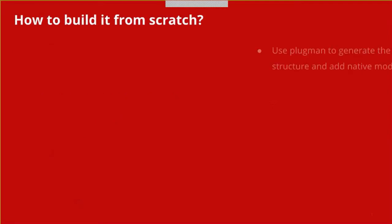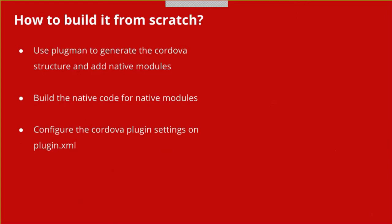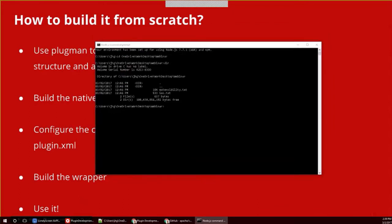Let's see how to build a native plugin from scratch. Use Plugman to generate the Cordova structure and add native modules, then build the native code, configure the plugin.xml for Cordova plugin settings, build the OutSystems wrapper, and finally use it. Using Plugman to create the plugin: this creates a plugin with a given name, plugin ID — which you use when referencing it on Cordova instead of the full URL — and a version that goes into the XML file.